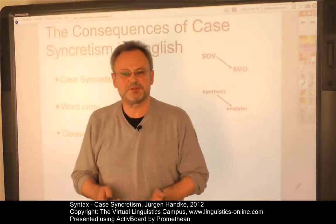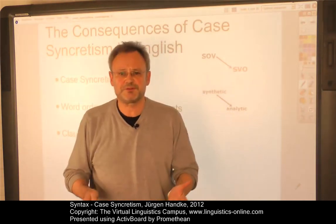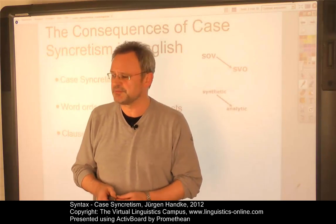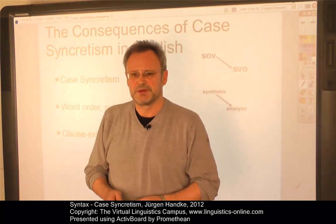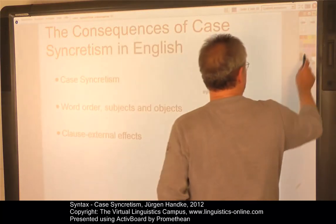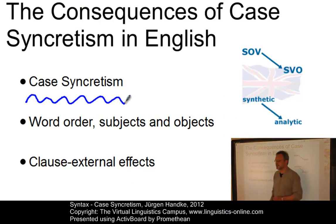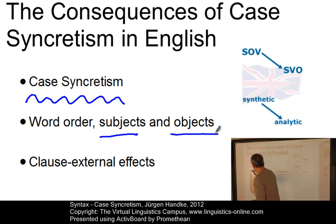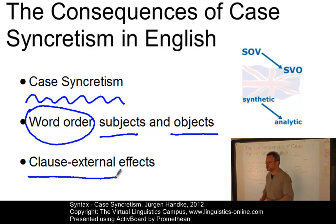This e-lecture discusses some of the consequences of case syncretism with regard to the choice of the main functional elements of clause structure and with regard to external syntactic operations. This raises several important questions: what is case syncretism? How are subjects and objects affected, and what about the development of the word order of English? And finally, what are clause external effects and what have they got to do with case syncretism?